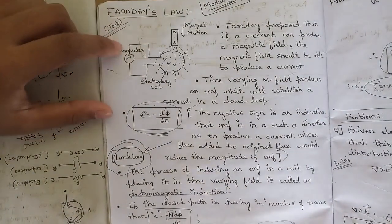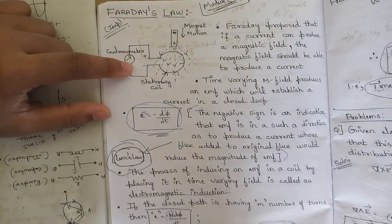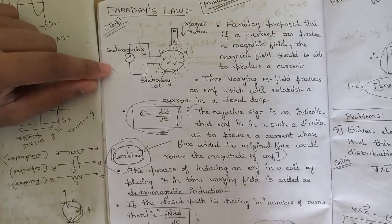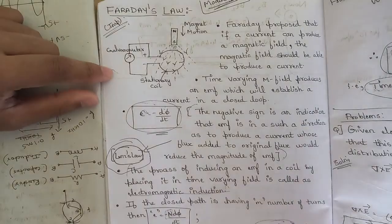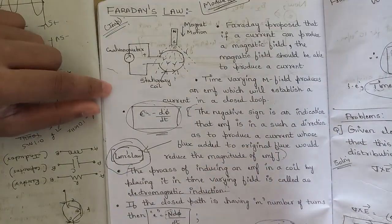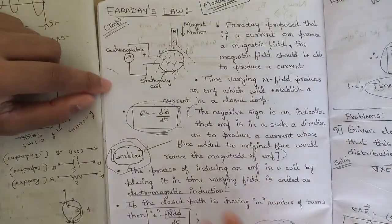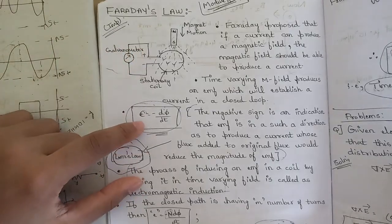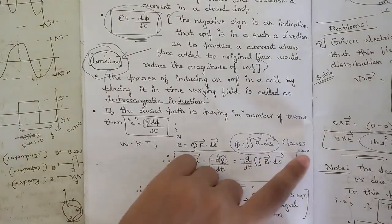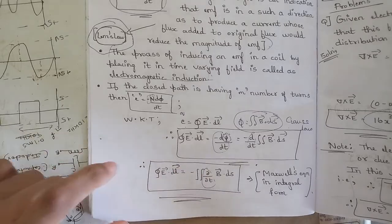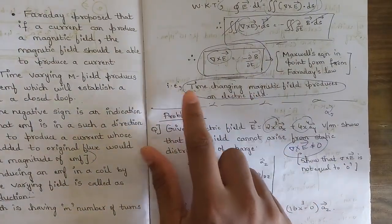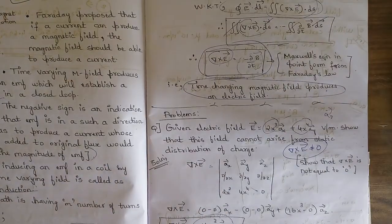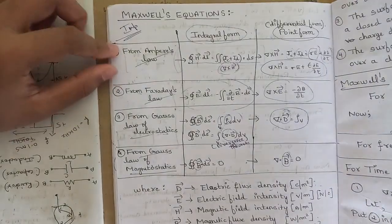In Module 5, two concepts are fixed questions you must study: Faraday's Law and Maxwell's Equations. For Faraday's Law: all equations, explanations, use of Lenz's Law in the derivation, relationship of charge with electric flux, and expressing Maxwell's equation in both point form and integral form. The key relation obtained is that a time-changing magnetic field produces an electric field. This may be asked for six to seven marks.